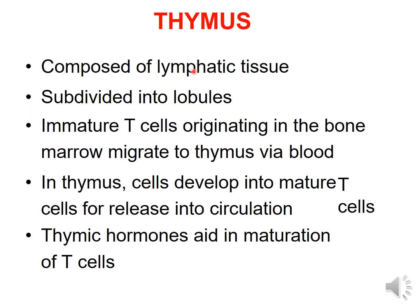The thymus is composed of lymphatic tissue. Each lobe is subdivided into lobules. Immature T cells originating in the bone marrow migrate to the thymus via blood, where they develop into mature T cells. Thymic hormones aid in the maturation of T cells, which is the main function of the thymus gland.